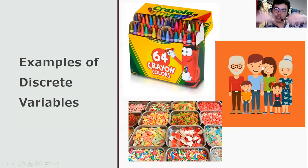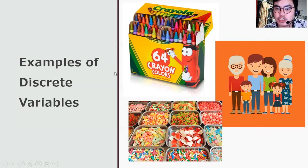Here are some examples of discrete variables. First, there are 64 crayons in the box, which makes this variable discrete. Here are six members of the family, including a grandfather, a grandmother, a father, a mother, and a son and a daughter. The number six makes this variable discrete.